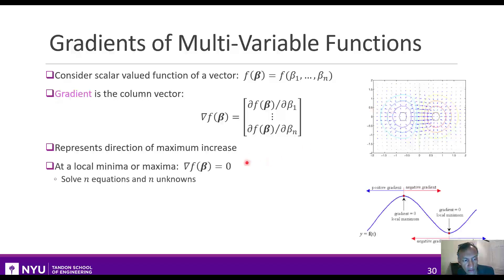The second property about it is that at any local minima or maxima, the gradient is 0. So, for example, here on the top, if you're at the bottom of the valley or you're at the top of the hill, you see that the arrow goes to 0.